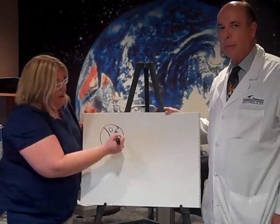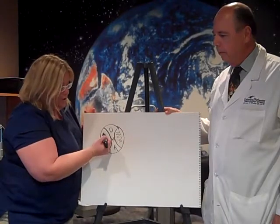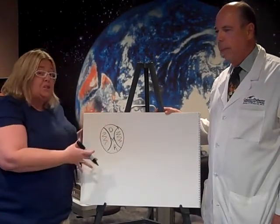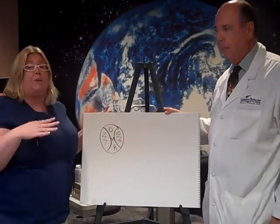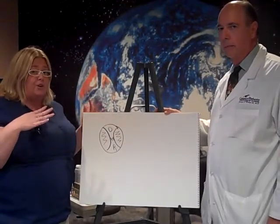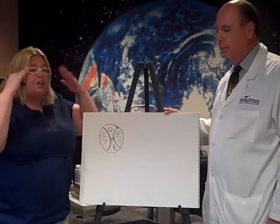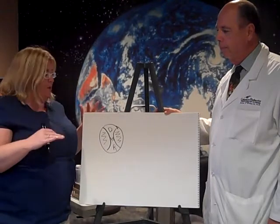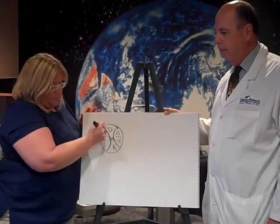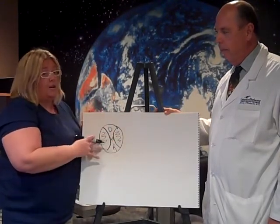Since the prescription is ground in this way, you do have what we call a peripheral distortion. That's where we teach people with progressives, we like you to point your nose at what you want to look at and learn to raise and lower your chin to focus into the channel because you will lose a little bit on your peripheral. This is the basic concept on how a progressive works.